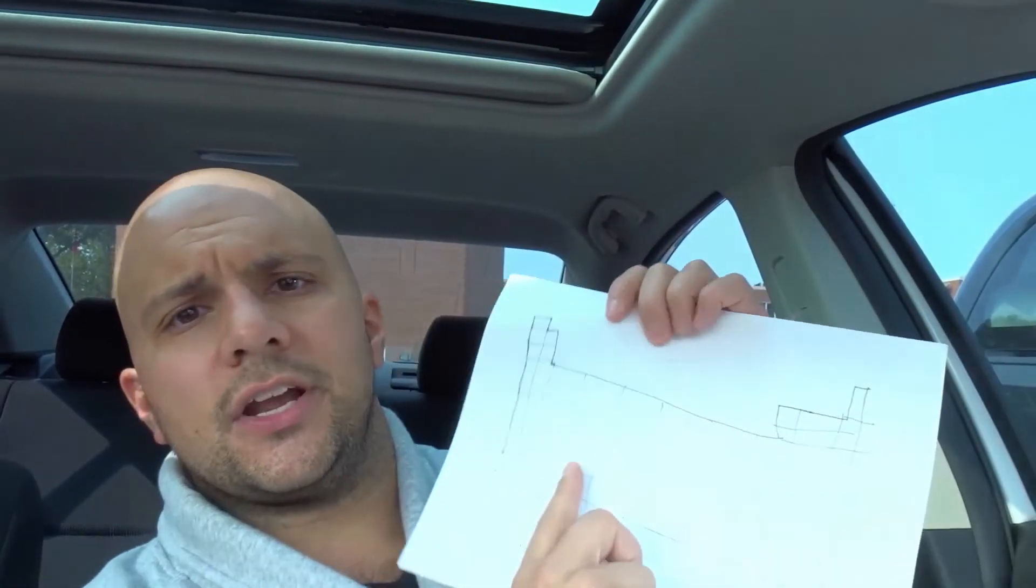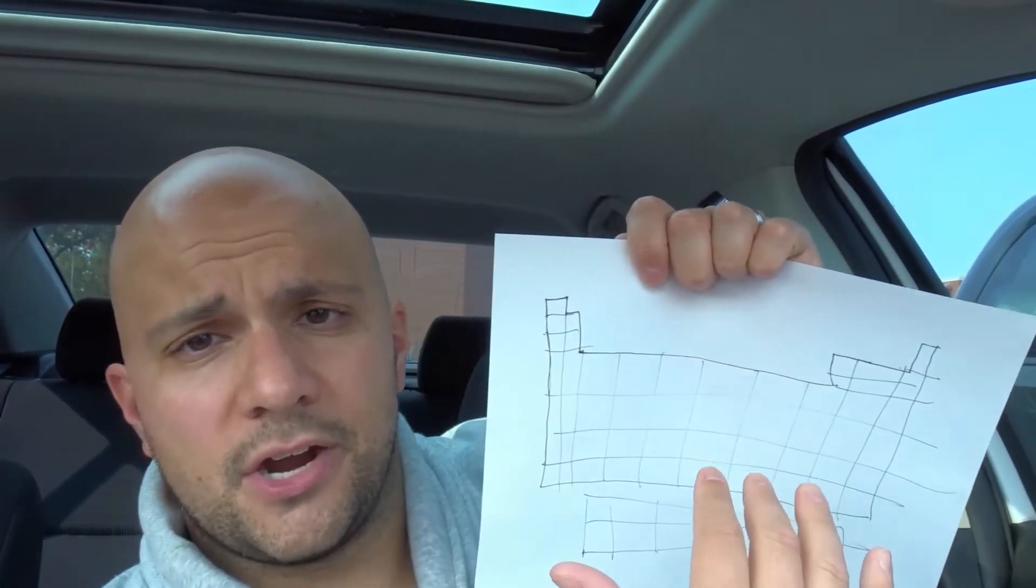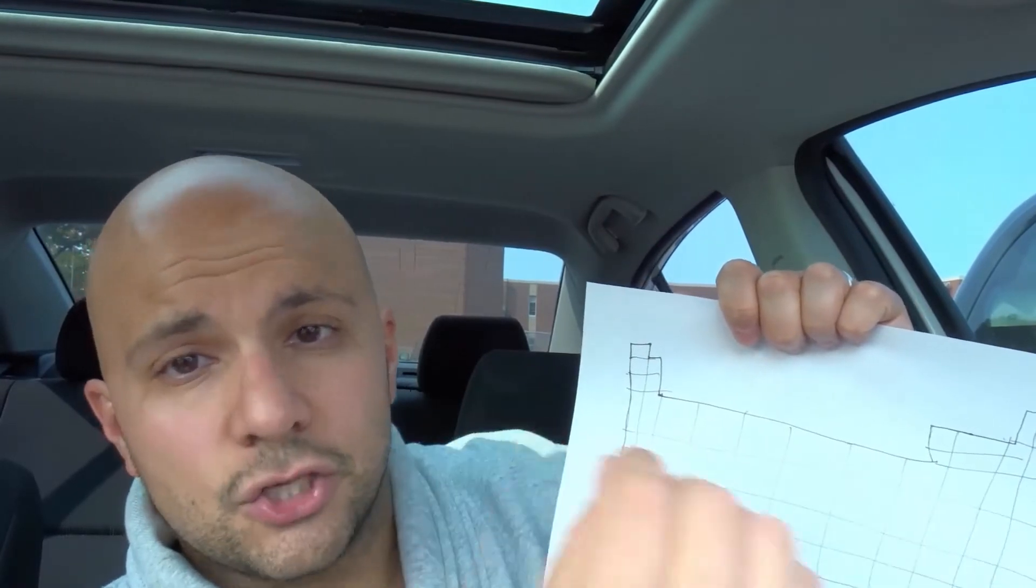So basically you're gonna have elements on your periodic table. It's a periodic table of elements. You're gonna start off with your first element. You're gonna see what it is and the short form for the element. Just one time. That's it.